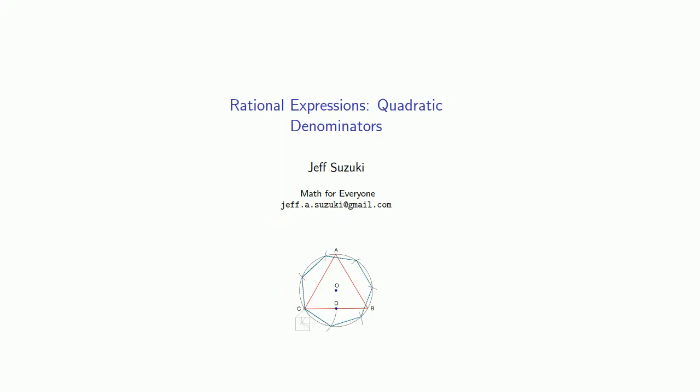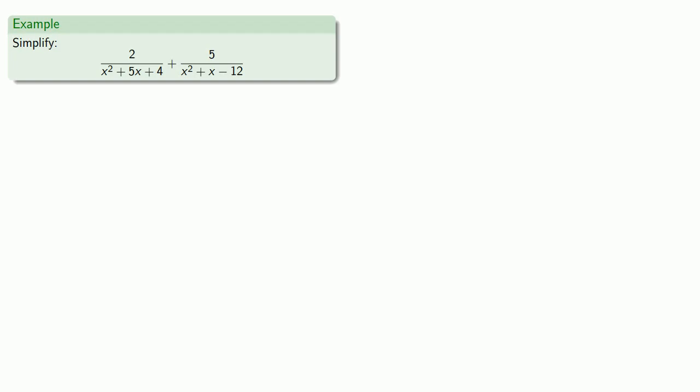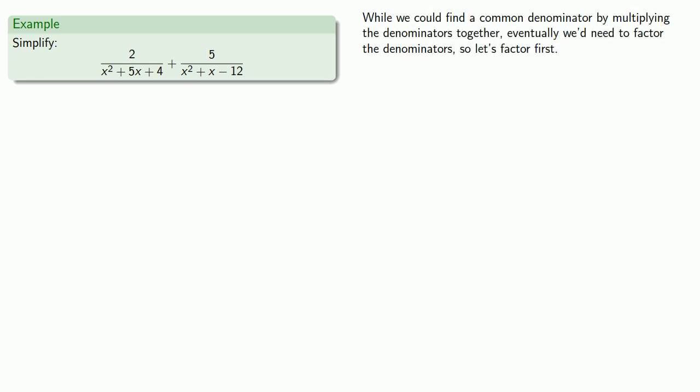What about trying to work with rational expressions that have quadratic denominators? Let's say we want to simplify the sum of these two rational expressions. While we could find a common denominator by multiplying the denominators together, eventually we'd need to factor the denominators, so let's factor first.